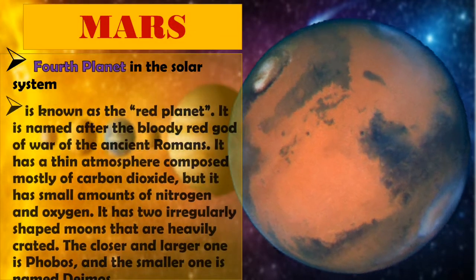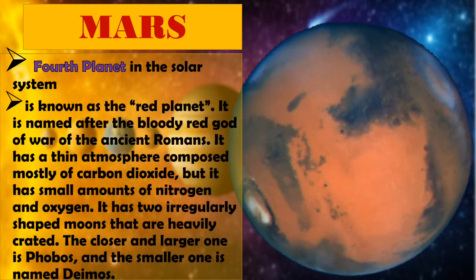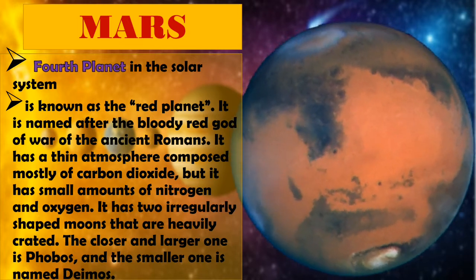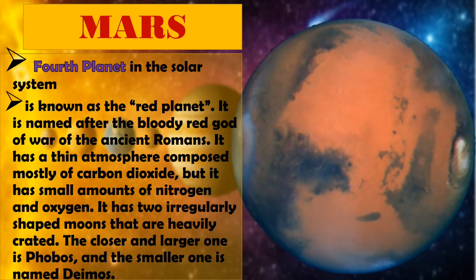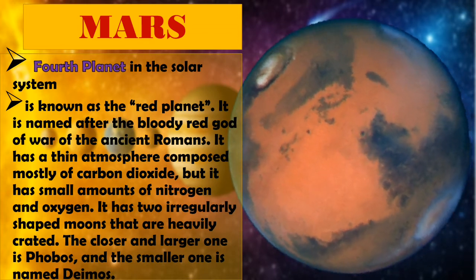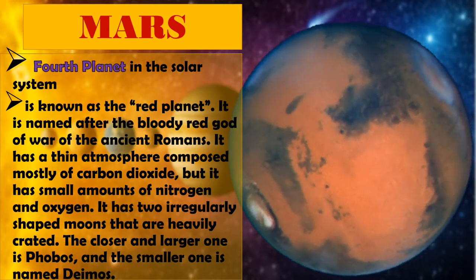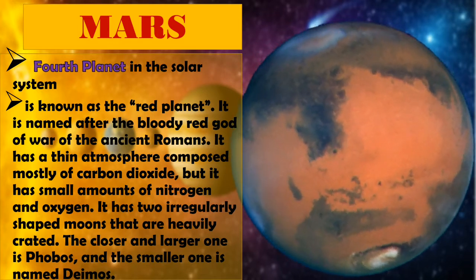Mars, fourth planet in the Solar System, is known as the Red Planet. It is named after the bloody red god of war of the ancient Romans. It has a thin atmosphere composed mostly of carbon dioxide, but it has small amounts of nitrogen and oxygen. It has two irregularly shaped moons that are heavily cratered. The closer and larger one is Phobos, and the smaller one is named Deimos.